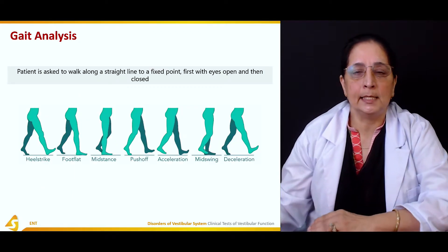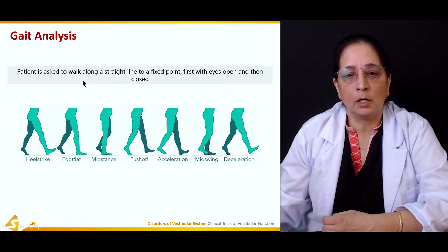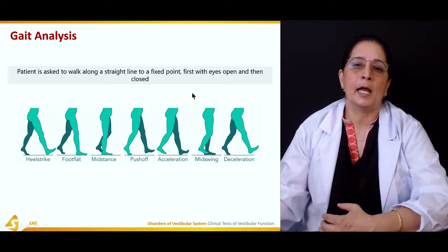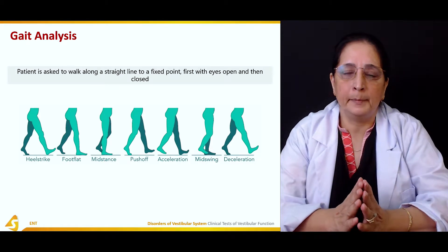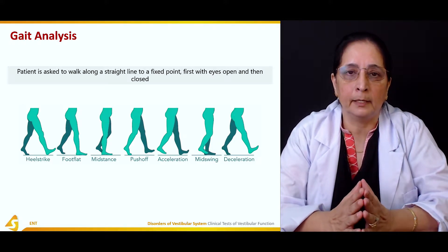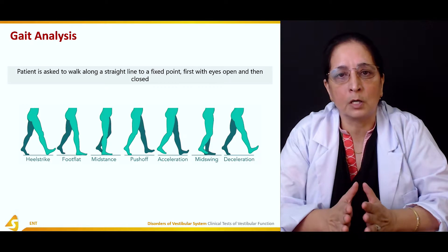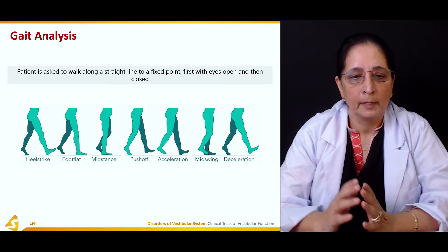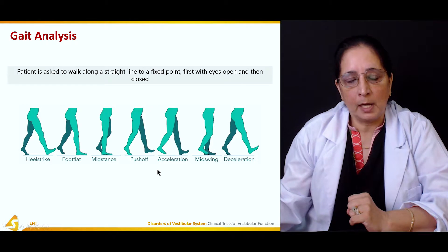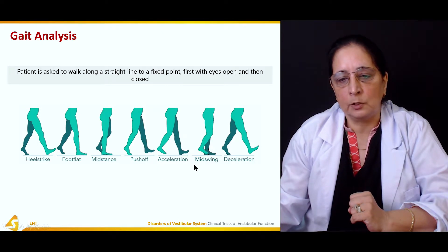Then gait analysis. Gait is the manner of walking. The patient is asked to walk along a straight line to a fixed point, first with eyes open and then with eyes closed. The gait cycle includes stance patterns — heel strike, foot flat, mid-stance, push off — where one foot is on the ground at all times, and swing patterns where the foot is raised.